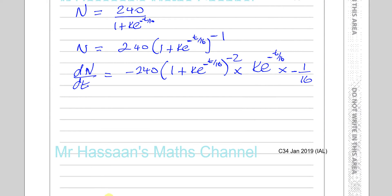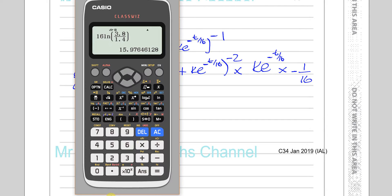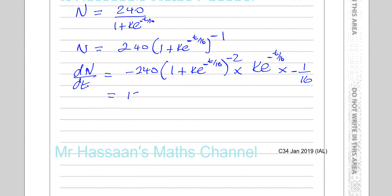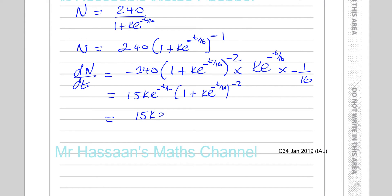You've got 240 divided by 16, which gives us 15, so that's going to be positive 15 times k e to the power of minus t over 16, multiplied by 1 plus k e to the power of minus t over 16 to the power of minus 2. We've just simplified these together, and now this can be rewritten with the bracket as a denominator with a positive power: 15k e to the power of minus t over 16, divided by 1 plus k e to the power of minus t over 16, squared. That's your dn/dt so far.